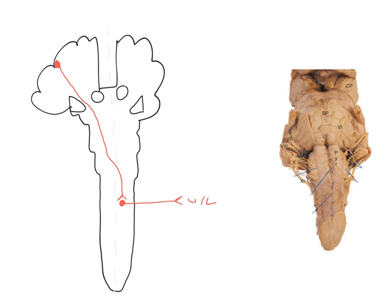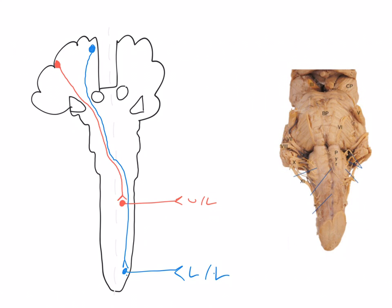That's the trajectory of an upper motor neuron destined to drive the upper limbs. Now let's draw an upper motor neuron involved in controlling the lower limbs. From the homunculus, those neurons are represented medially in the hemisphere and their trajectory is the same — down through the corona radiata, between the thalamus and lentiform nucleus, through the cerebral peduncle, down through the pons, through the decussation of the pyramids, and into the caudal spinal cord to synapse on lower motor neurons driving the lower limbs. They just run more distally.